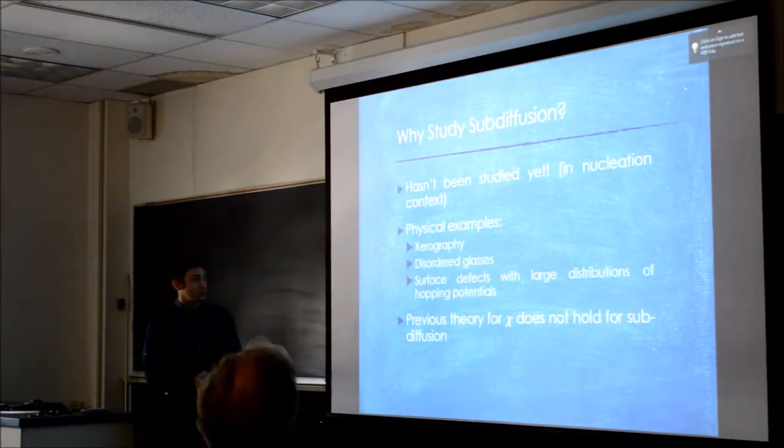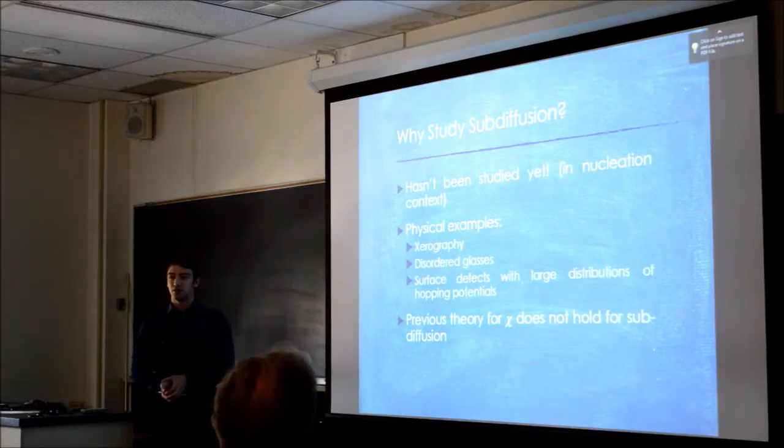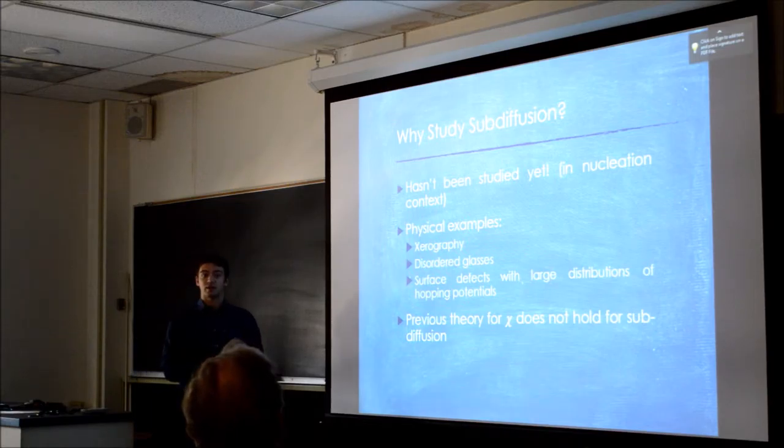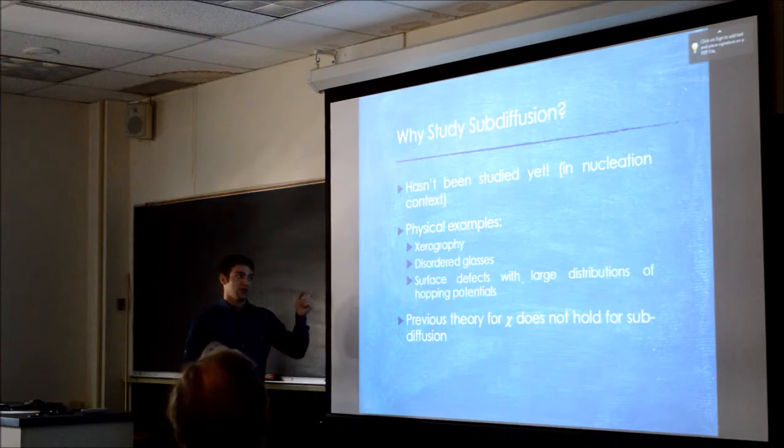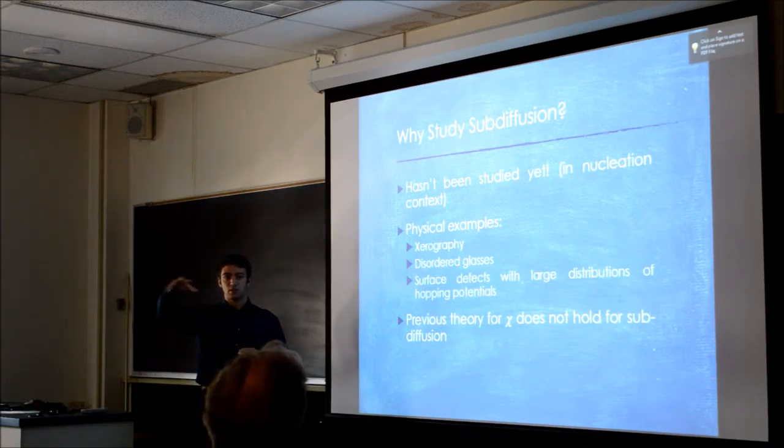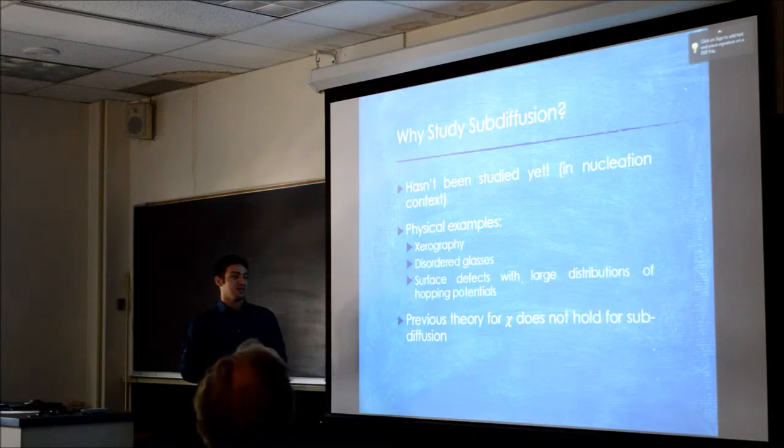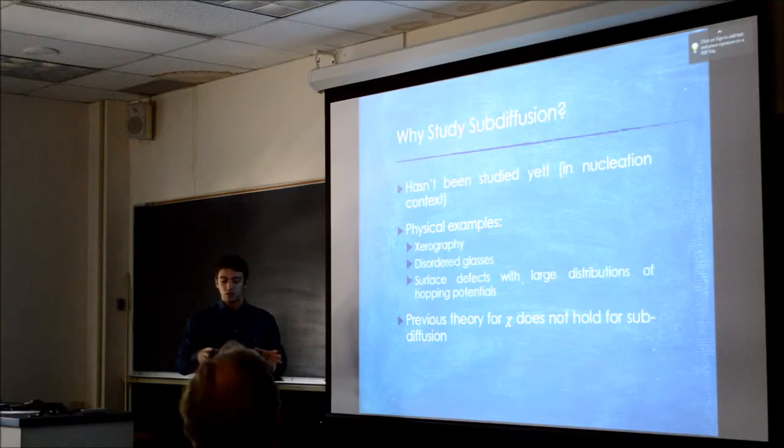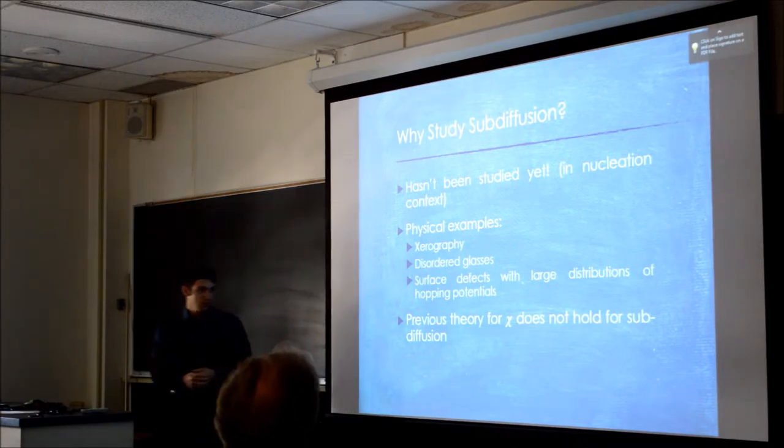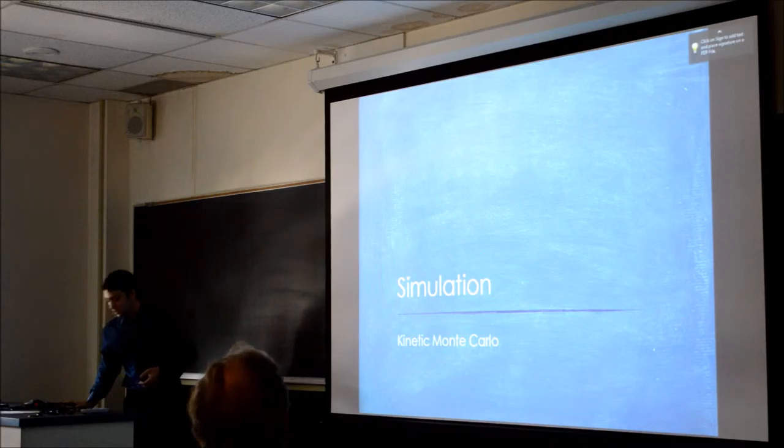Now, sub-diffusion. Sub-diffusion is what I think is cool, and one of the reasons is because it hasn't been studied yet in this nucleation context. Nobody has studied it from the perspective of island nucleation and growth. And it is physically relevant. An example is xerography, which comes from the xerox machine. It has to do with how electrons are biased to move. It also shows up in disordered glasses, and anywhere where the thing you're depositing on has kind of surface defects or an irregular shape that can cause large distributions of hopping potentials. Basically, somebody can get stuck in a certain spot, and then they're there longer than they are somewhere that isn't as deep of a well.